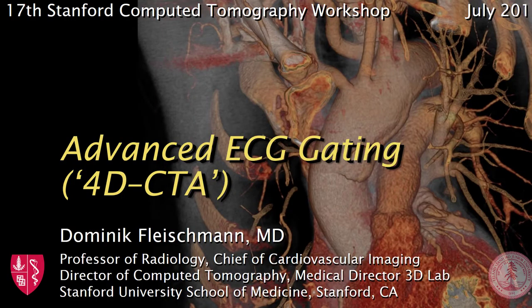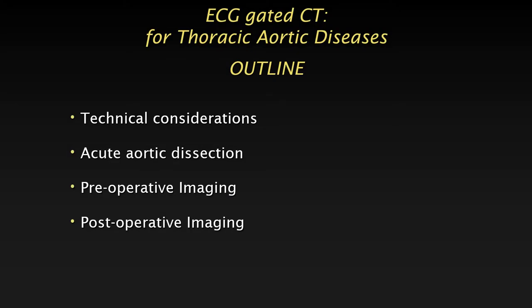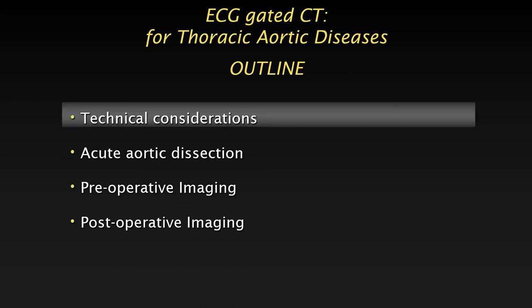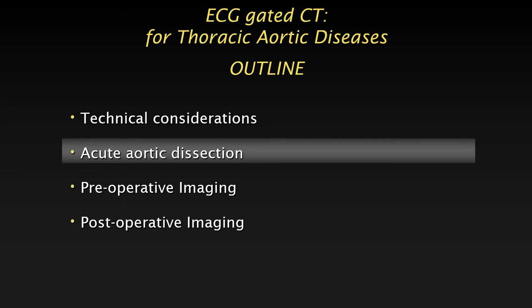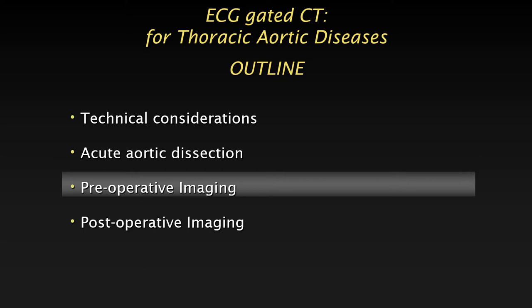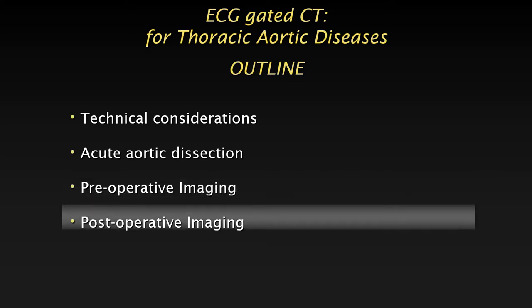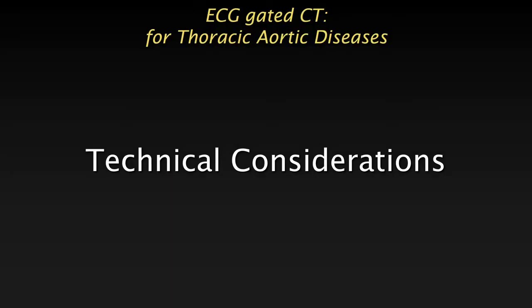On this topic of advanced ECG gating or 4D CTA, we'll talk about four brief topics. We'll address the technical background very briefly, then show three blocks of examples of how we really use it most of the time. One is in the setting of acute aortic dissection, one is in preoperative imaging before aortic valve replacement or structural heart imaging, and also for postoperative imaging like post-stent graft or post-surgical imaging in general.